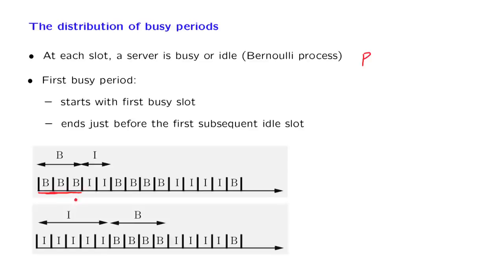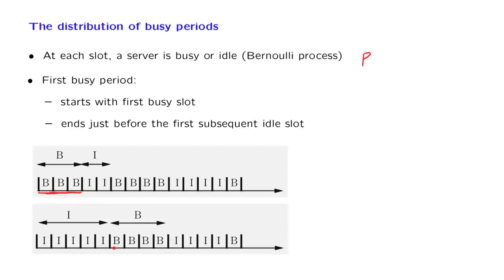It could also be the case that the first slot is idle. In that case, the busy period starts with the first busy slot that shows up—it's this slot in this example—and extends until just before the first idle slot that we observe. So in this example, the busy period extends for four time steps.